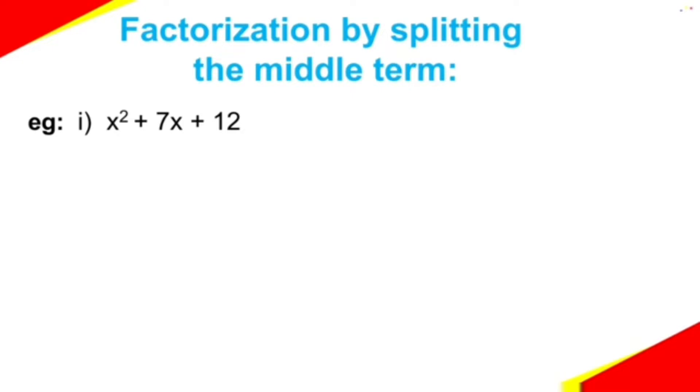In this polynomial, the middle term is 7x. So we need to split this 7x into two parts. For that, let us use the following steps.